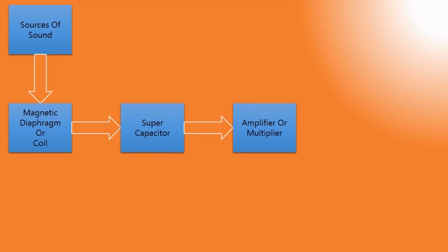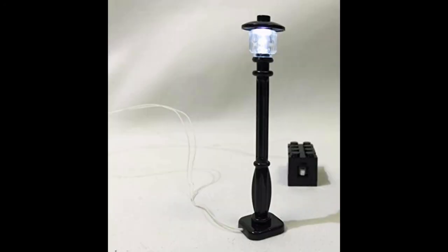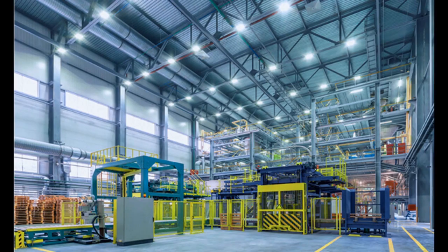This amplified supply of electric energy is then used to charge the battery. Thus, this energy stored in the battery can be used for various applications such as street lights, industrial illumination, and much more.